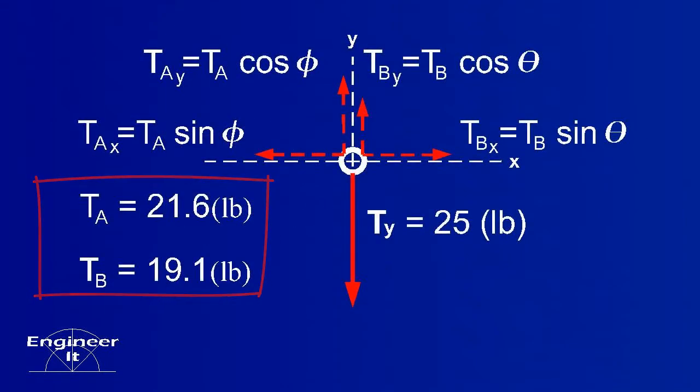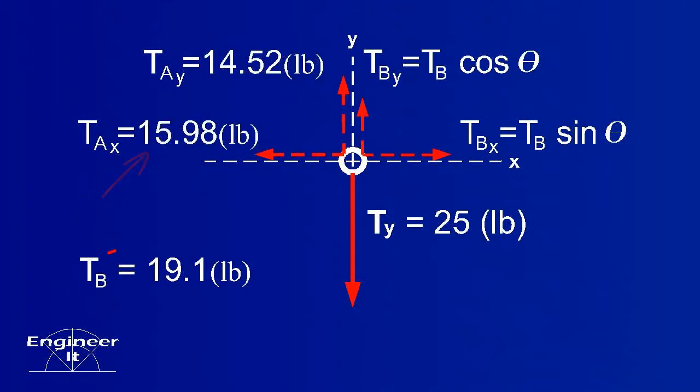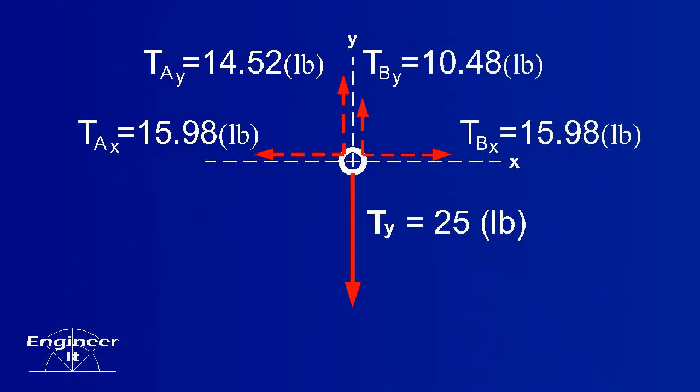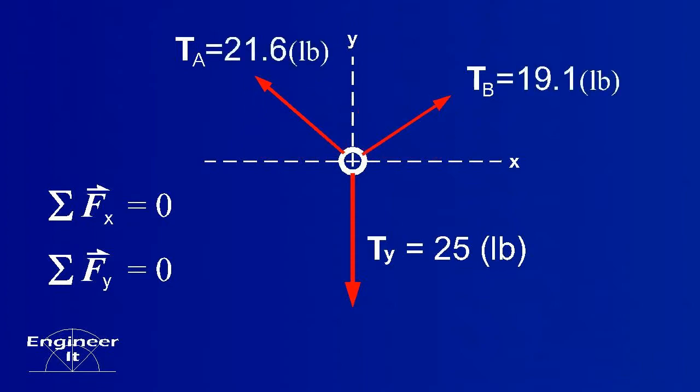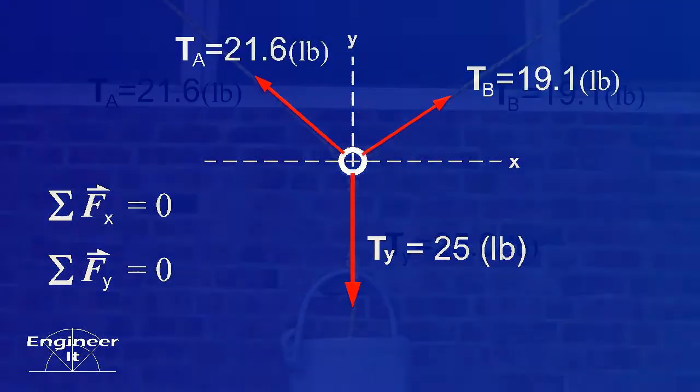With these values, solve for the components to check the answer. Verify that the sum of the forces equals zero. Return to the original tension forces in the ropes to complete this problem.